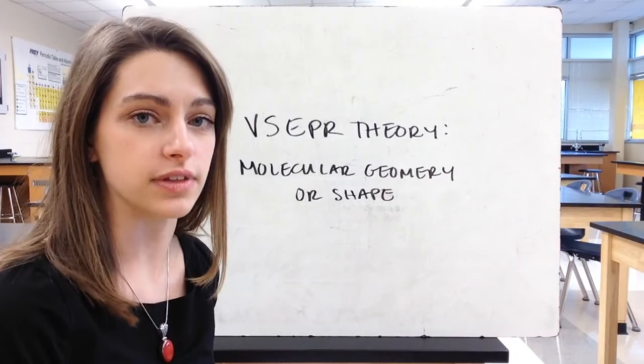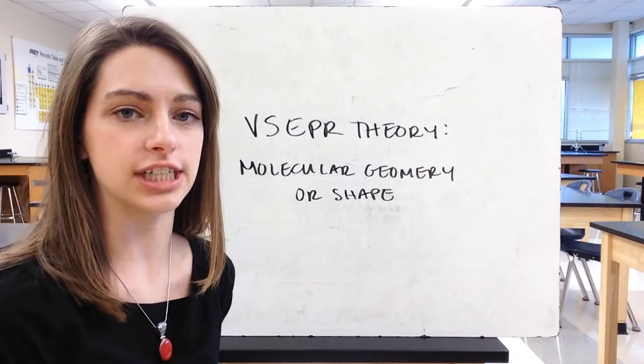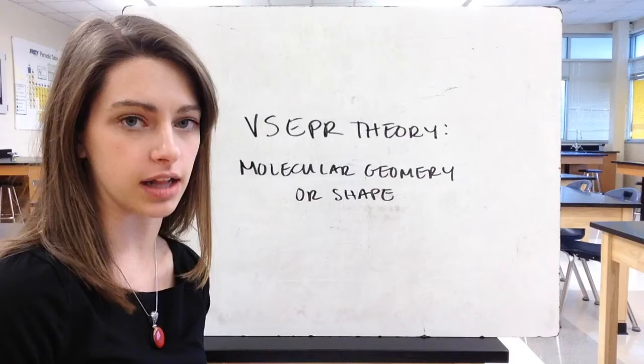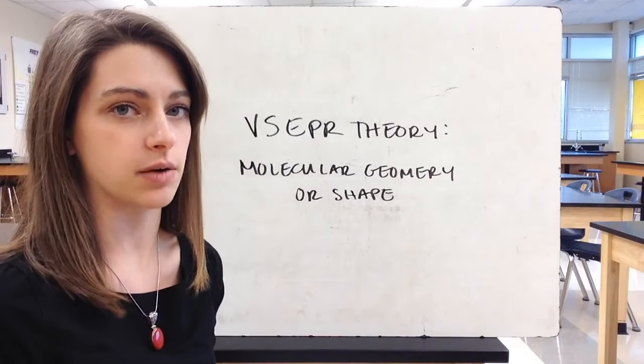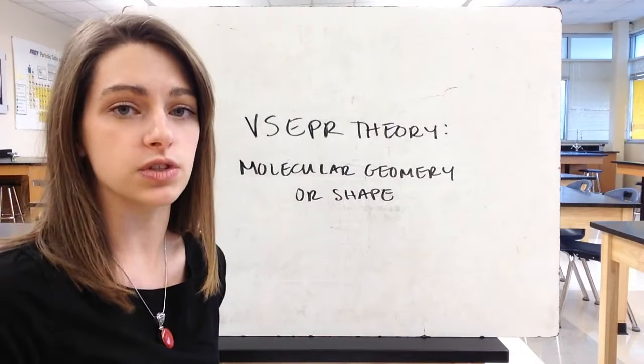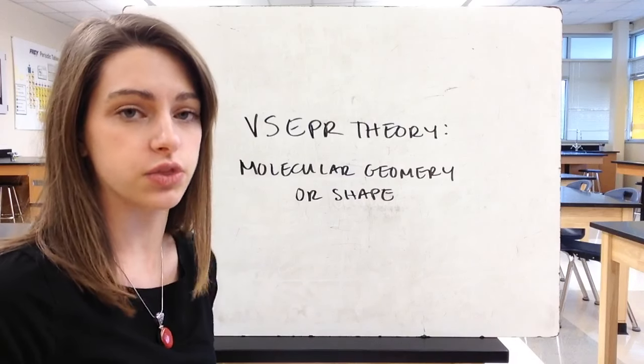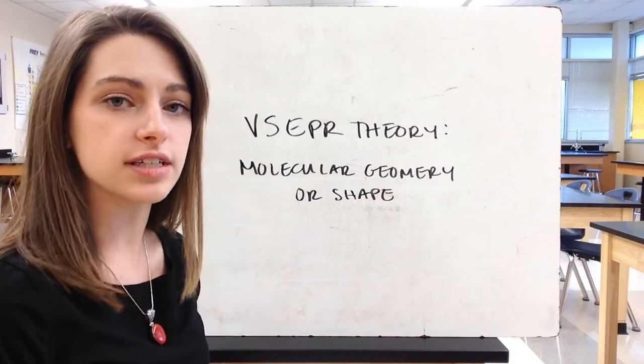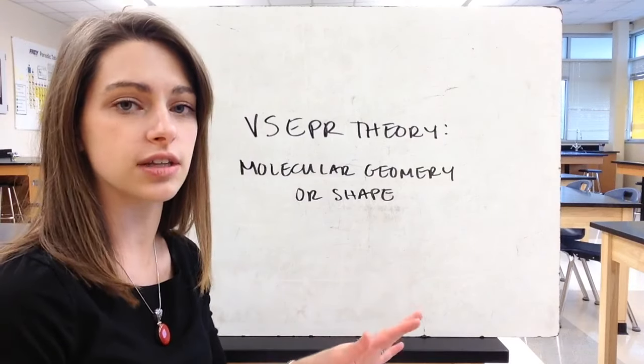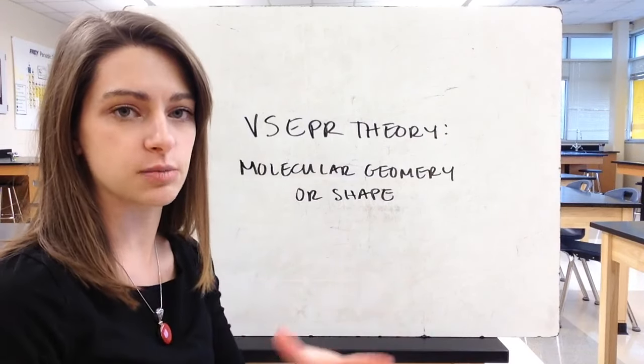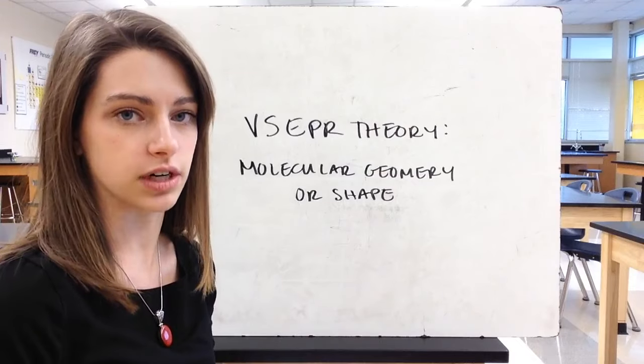When we talk about VSEPR theory, we're talking about the molecular geometry or shape of our molecules. These are what covalent compounds look like when bonded together. Molecules don't exist in 2D space - they're 3D structures. VSEPR theory helps us take our 2D Lewis structures and turn them into 3D molecular geometry structures.